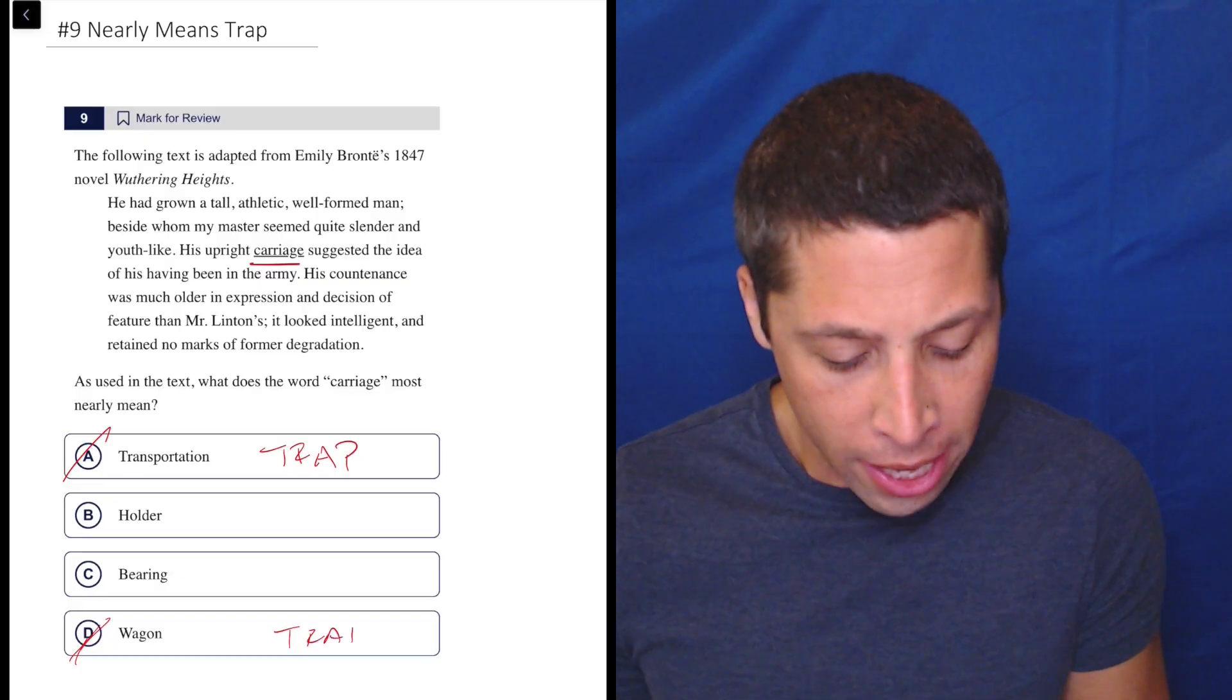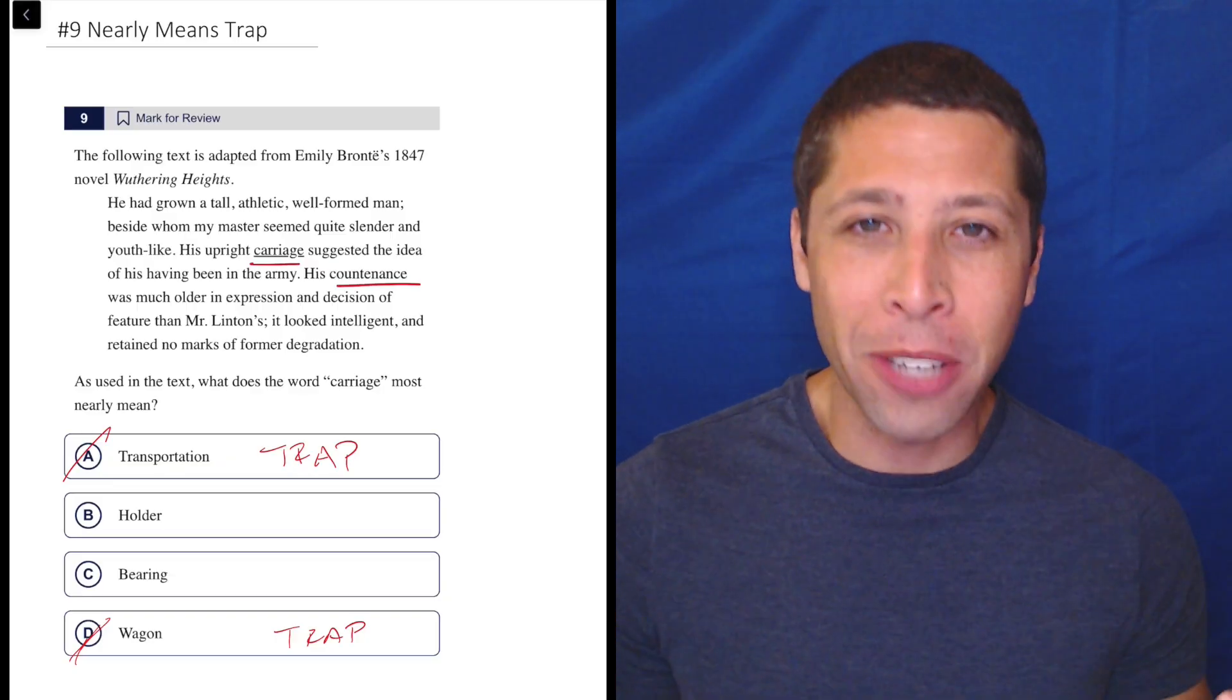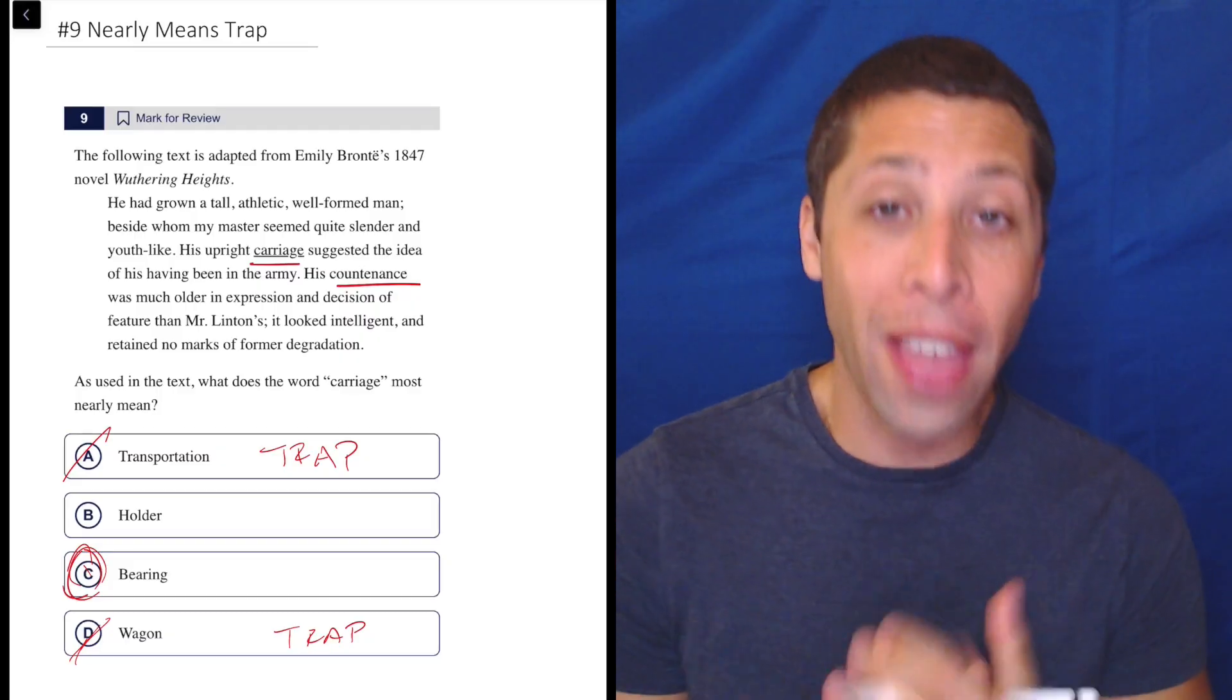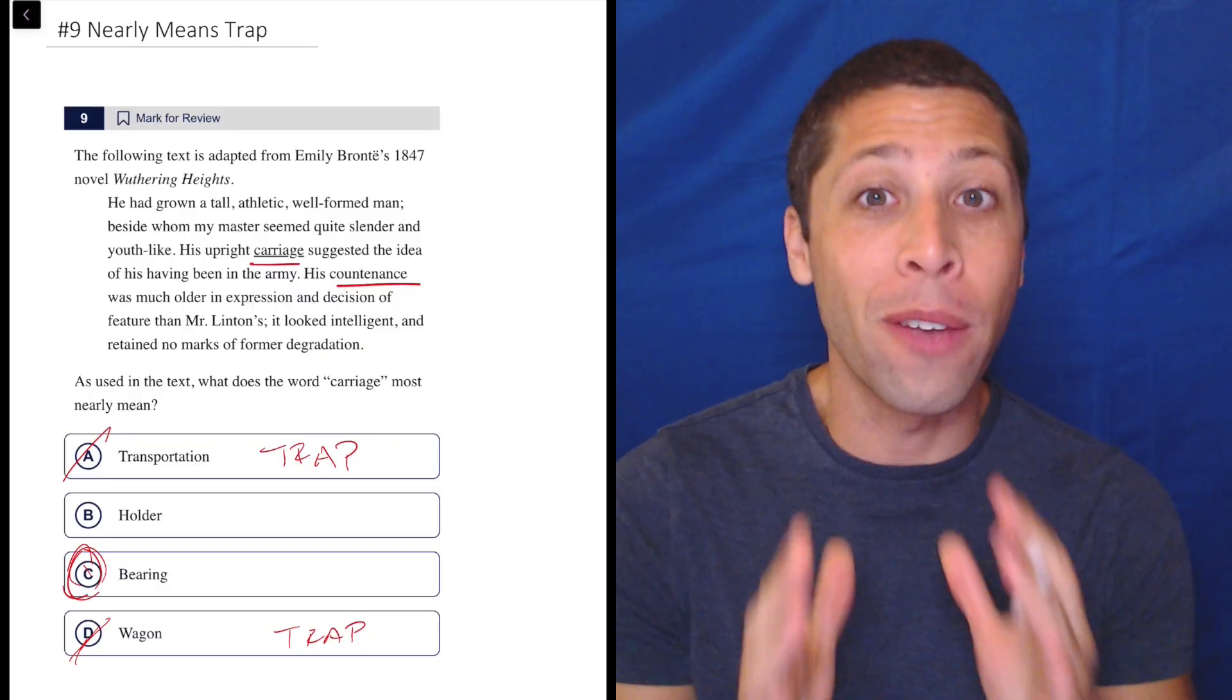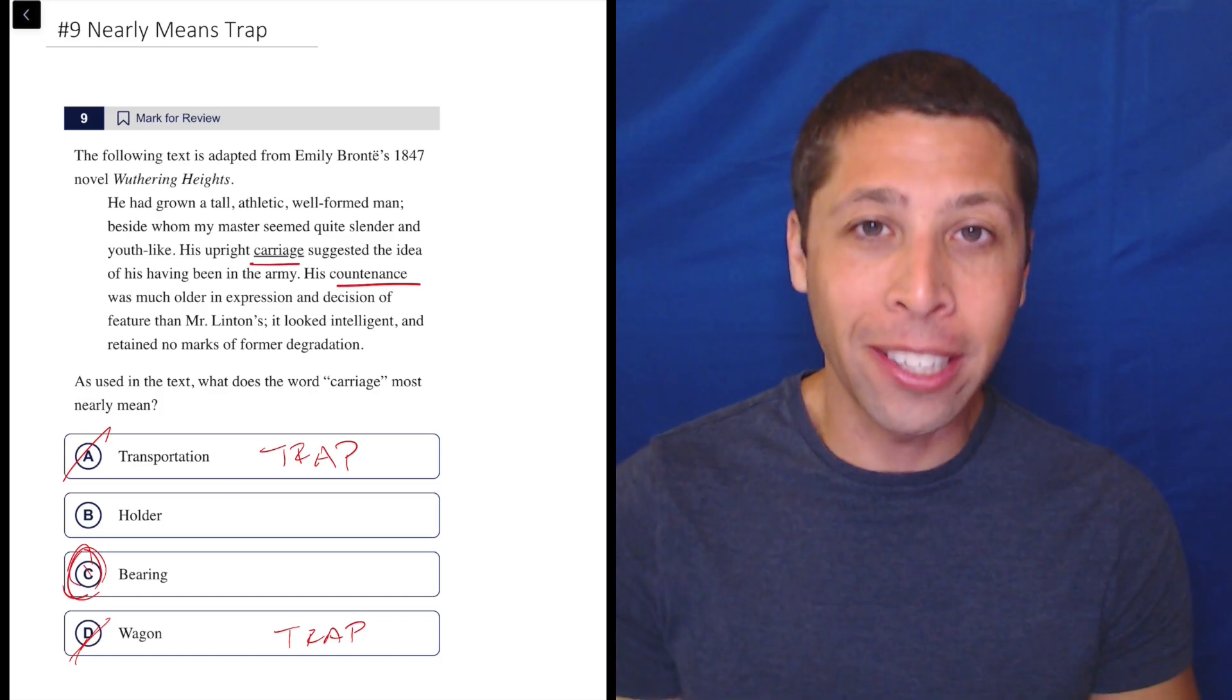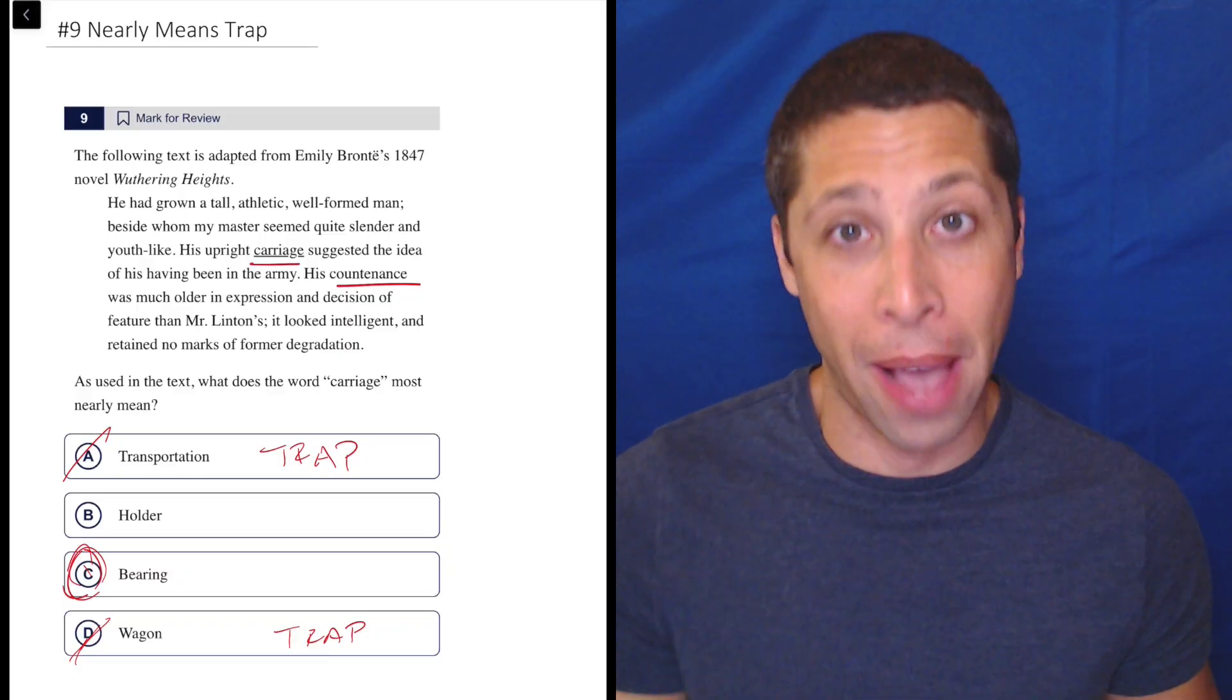Instead, we can then just look at the passage and see what kinds of clues we have. They're talking about what he looks like, his countenance, which is kind of the way that you seem to other people. So that would be like your demeanor or your bearing. So that is definitely the answer. Now, if it is an easier one of these questions, it is totally possible that the correct answer will be a very common definition of the word. So if you've got a lot of evidence that the common definition is correct, then just pick it. But if it's a hard question, you have no idea what's going on. At the very least, you should avoid the more common definitions of these words because they're probably traps. And it's probably an uncommon definition that works with that passage.